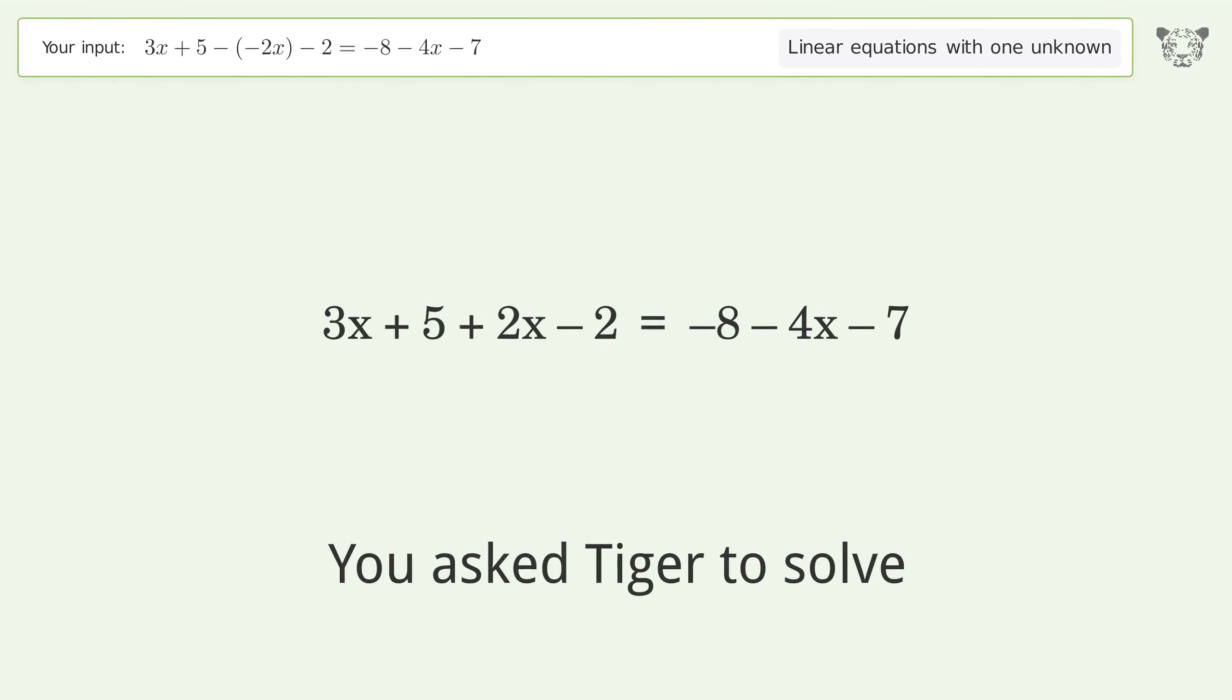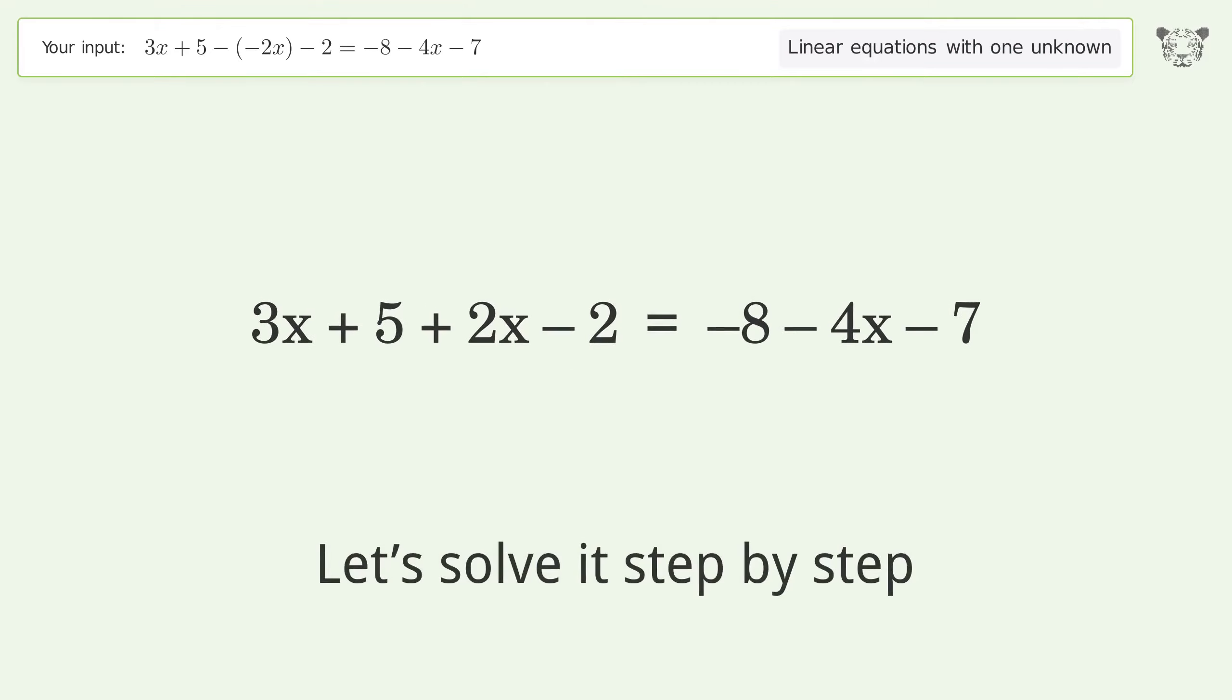Tiger solves this linear equation with one unknown. The final result is x equals negative 2. Let's solve it step by step. Simplify the expression and group like terms.